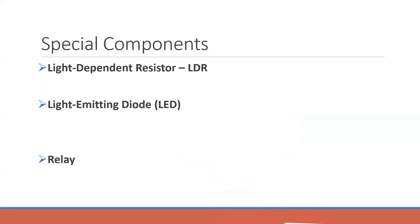Next is the relay. Relays are components used in circuitries as a type of switch. Originally used in telegraph circuits as signal repeaters, they transmit signals from one circuit to another — that is how the relay came into the field.